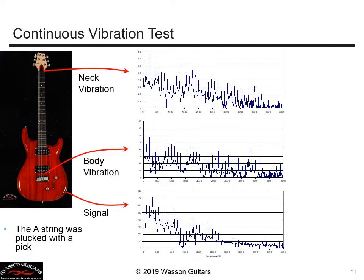We once again go to our old friend the Fourier transform — this time on both the output signal and the two accelerometer outputs. With just a quick visual it appears that the string modes are all present on both the vibration data and the signal data. But there are lots of modes here. How can we be sure there's a relationship? How does the structure vibrating correlate to the vibration of the string itself? Is there a way to compare the signals and see if they have commonality?